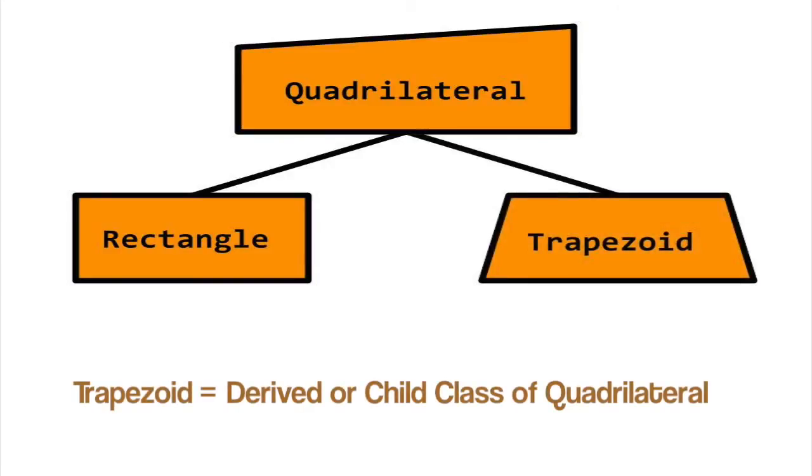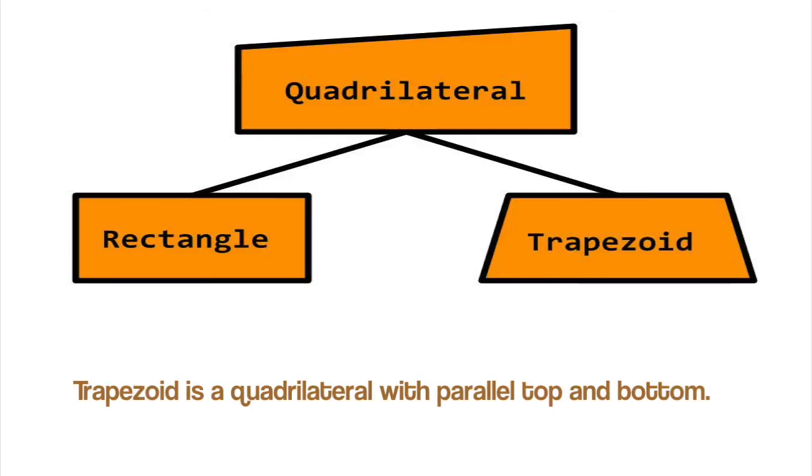Let's make another child class of Quadrilateral called Trapezoid. Like Rectangle, Trapezoid has the attributes of Quadrilateral. Trapezoid inherits the traits of Quadrilateral, plus the trait of having a parallel top and bottom.